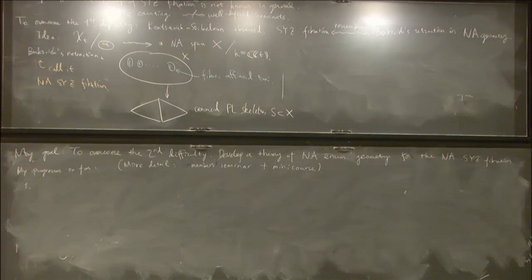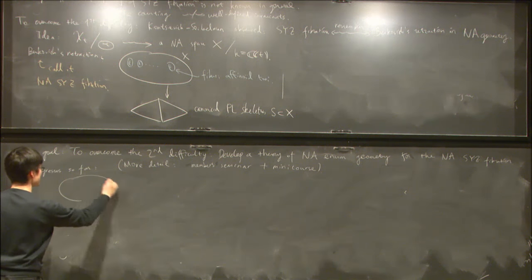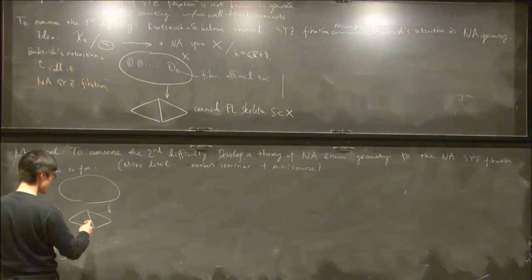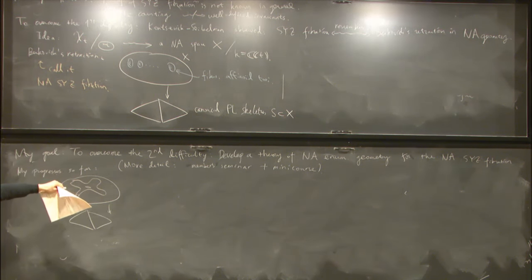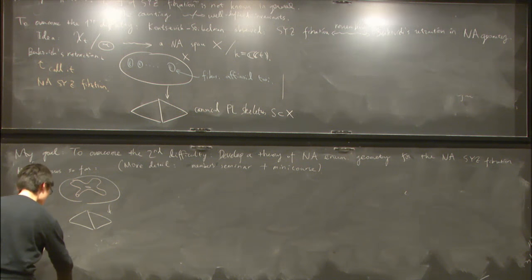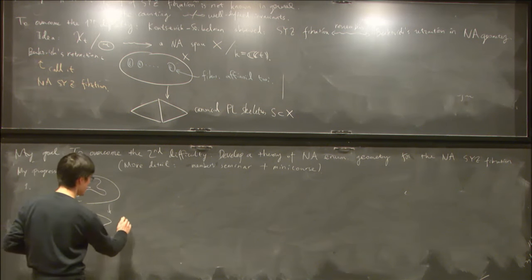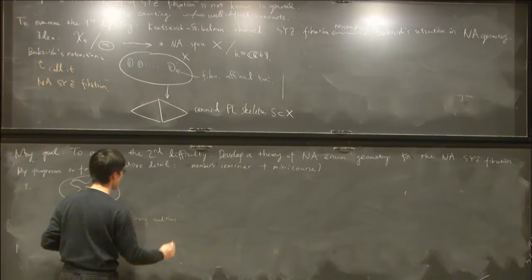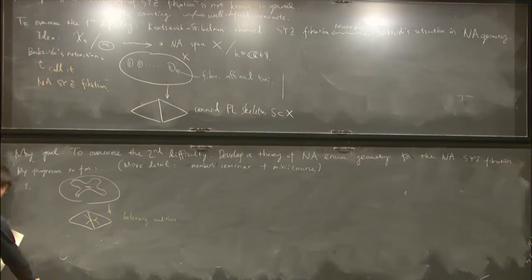First, I studied the behavior of analytic curves under Berkovich's retraction. One can show that when we have any analytic curves inside X, its image under Berkovich's retraction is always a piecewise linear graph satisfying special combinatorial properties. These are called balancing conditions, which are determined by the geometry of X.